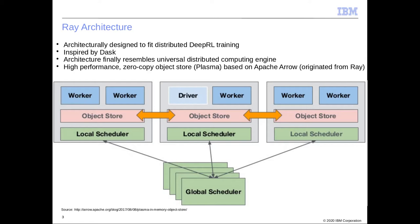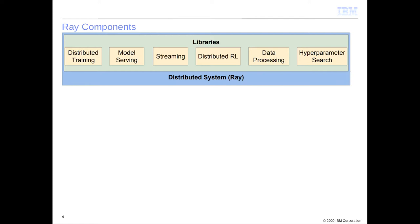The Ray architecture is designed to fit distributed deep RL training. It was initially inspired by Dask but now resembles a universal distributed computing engine. For high-performance zero-copy object storage they use Plasma, which is based on Apache Arrow. It has a local scheduler which mitigates the bottleneck of the global scheduler in Apache Spark. On top of Ray you have different libraries, the most prominent being distributed RL backed by RLlib.